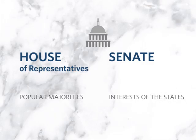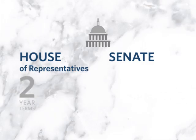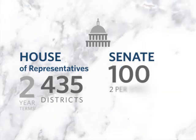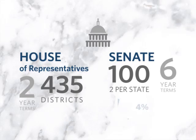Our system currently provides for a two-year term of office for House members from the 435 population-based districts. In the Senate, voters of each state elect two senators who serve six-year terms that overlap, such that only one-third of the chamber is up for election in any given election cycle.